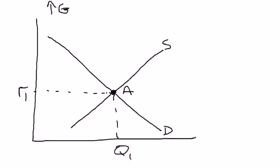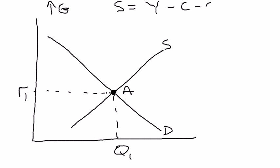Now, you might remember that national savings, when you went through all of the accounting, you came up with: national savings equals income (real GDP) minus consumption, minus government spending. So if we assume income is constant and consumption is constant, then if you increase government spending due to a war, then mathematically there's no way around it — there's a decrease in national savings.